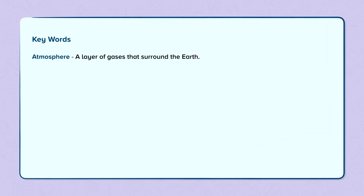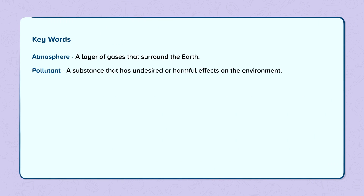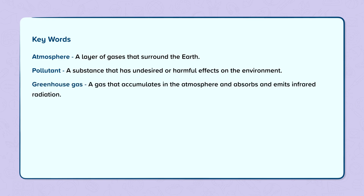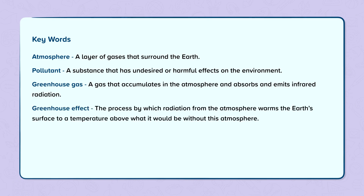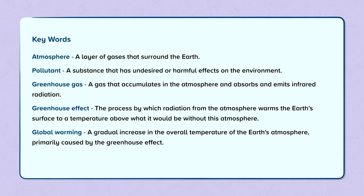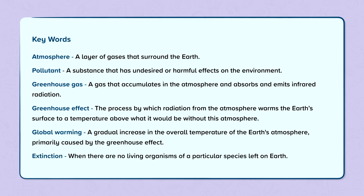Key words. Atmosphere: a layer of gases that surround the earth. Pollutant: a substance that has undesired or harmful effects on the environment. Greenhouse gas: a gas that accumulates in the atmosphere and absorbs and emits infrared radiation. Greenhouse effect: the process by which radiation from the atmosphere warms the earth's surface to a temperature above what it would be without this atmosphere. Global warming: a gradual increase in the overall temperature of the earth's atmosphere, primarily caused by the greenhouse effect. And extinction: when there are no living organisms of a particular species left on earth.